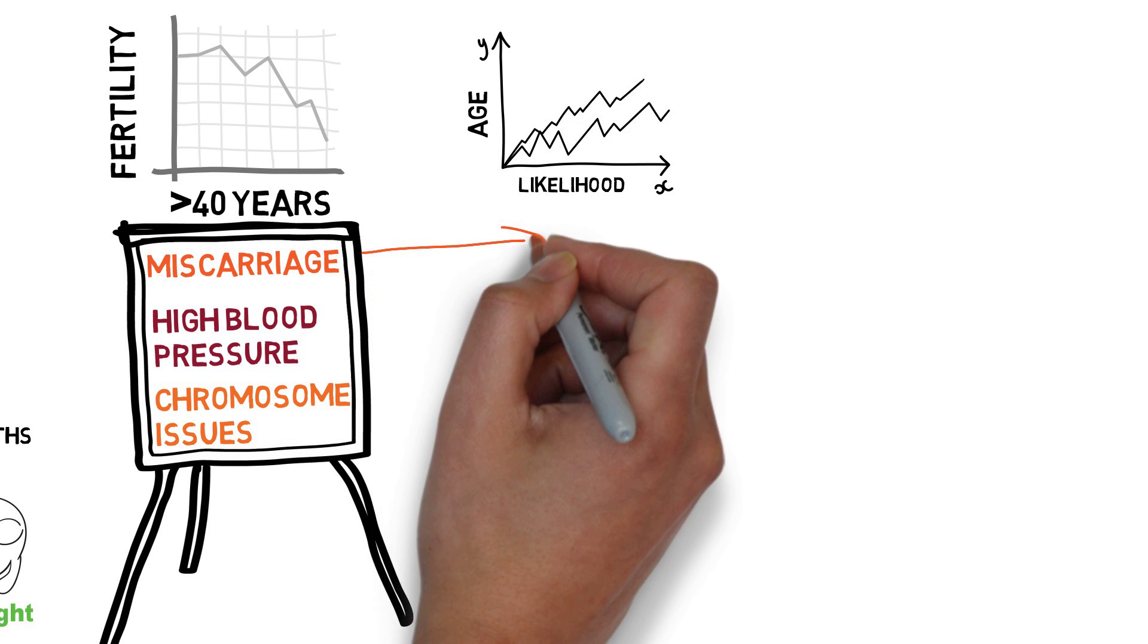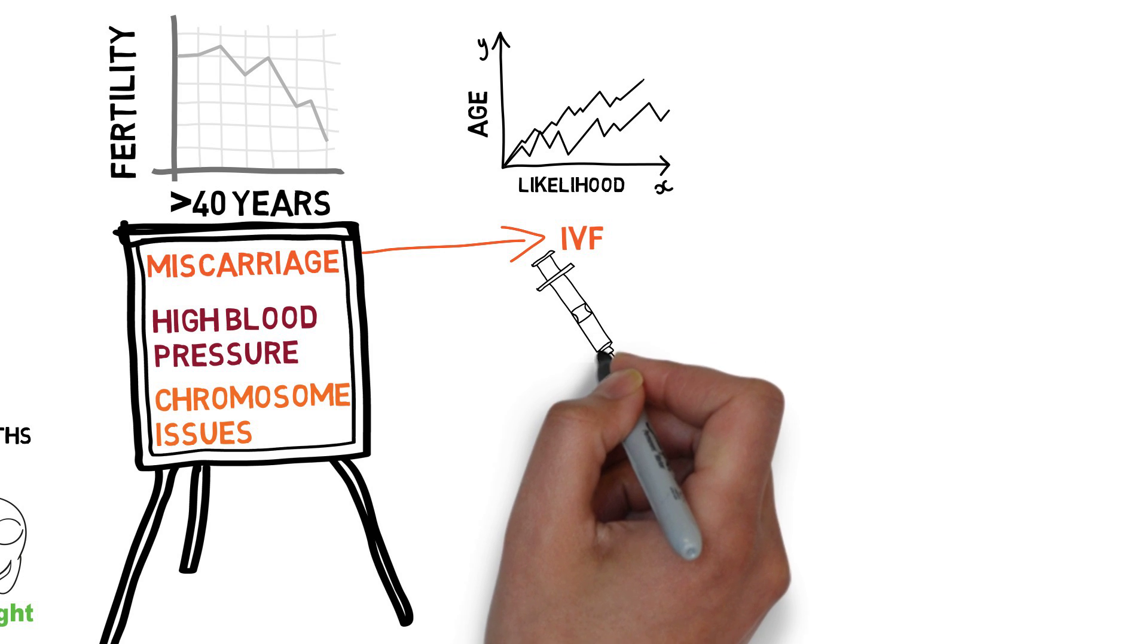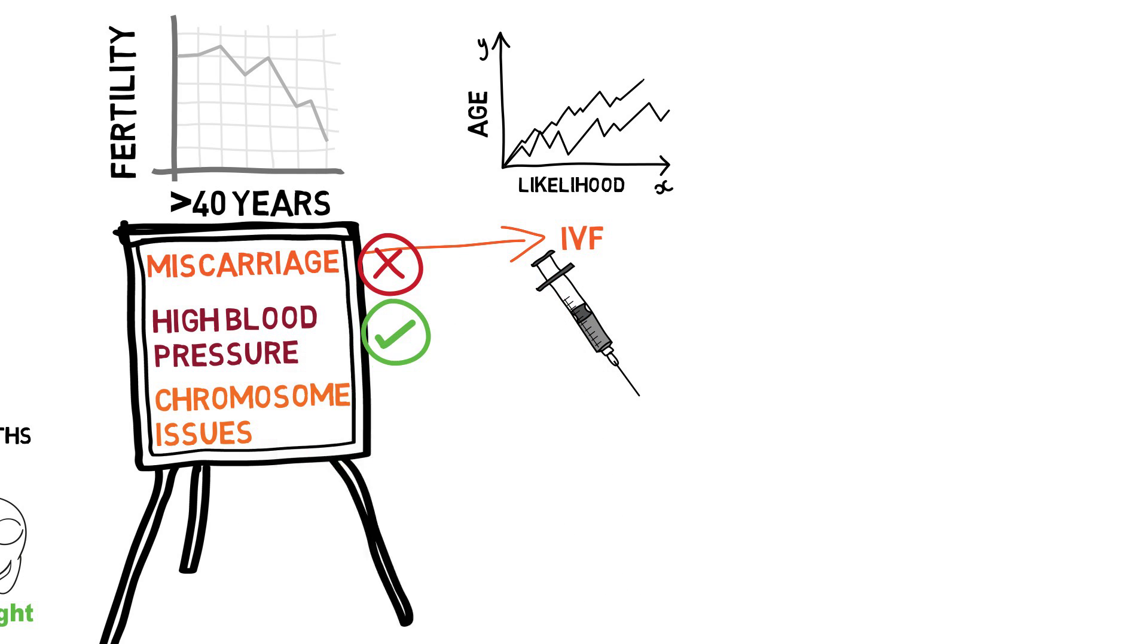Most of the data on miscarriages is focused on women who go through IVF pregnancies, so it's not a great source to use. However, there is good data for blood pressure and chromosome issues.